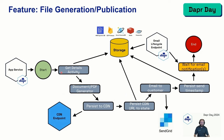We're going to get the details from the state store, generate the document and PDF, and persist that to the CDN. For CDN, there isn't a Dapr binding for it — I typically use Bunny CDN and have my own SDK. That's fine; Dapr is opt-in. If it doesn't have what you need, use the third-party SDK. Then we persist the URL reference to state — it's much cheaper and lighter to pass messages like 'here's the URL to the object' rather than passing the entire object. Then we email the customer and persist when we sent the file. There's also a service listening back from SendGrid about email lifecycle — did we receive a bounce notification? If the email bounced, we need to reach out to the user. If it was marked as read, we persist that timestamp as it may be useful in a future support request.